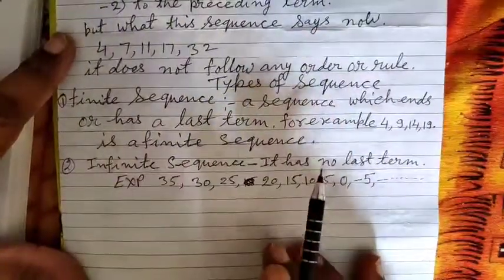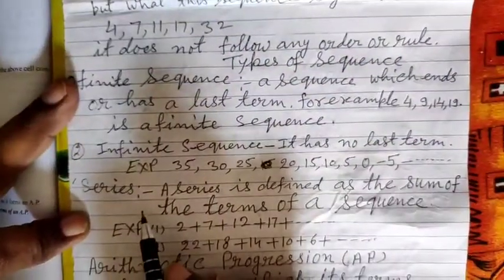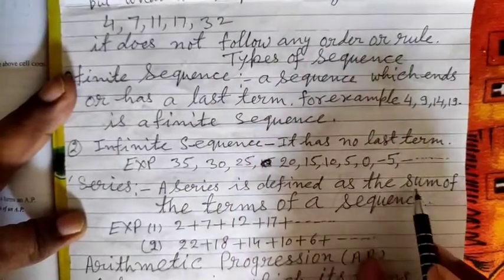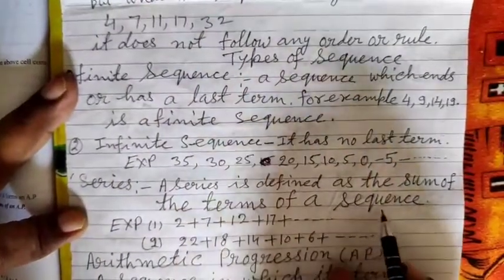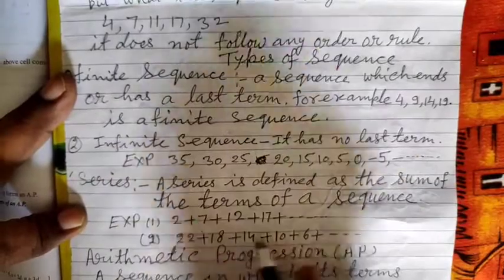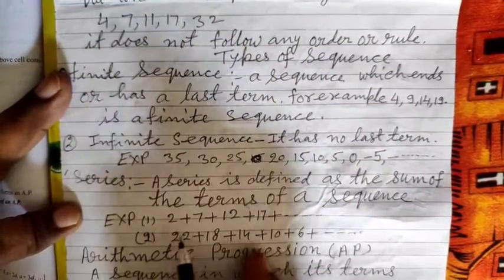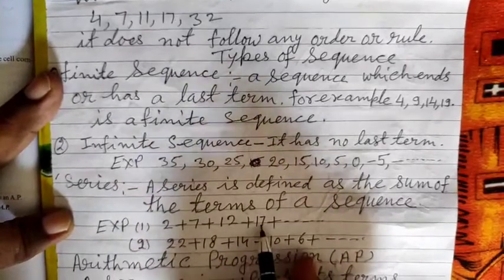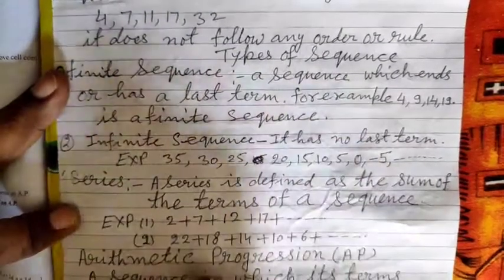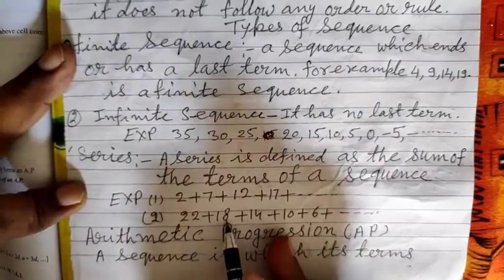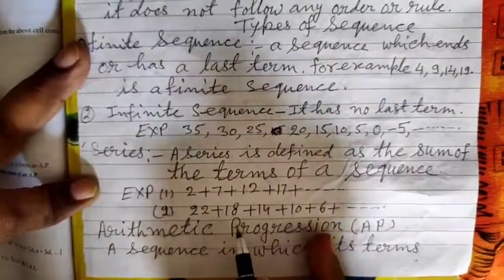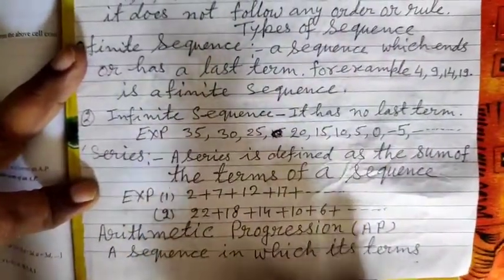Now, what is a series? A series is defined as the sum of the terms of a sequence. A series is the sum of the terms of a sequence. For example: 2 + 7 + 12 + 17 + ... and so on — this is an increasing order series. And 22 + 18 + 14 + 10 + 6 + ... — this is a decreasing order series.